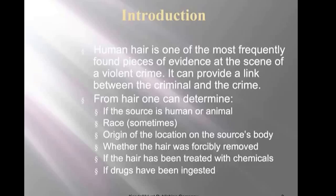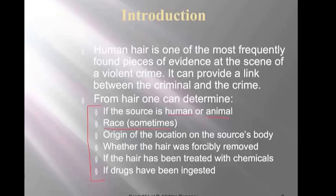Here we have a list of some things that you can determine by looking at a single hair. You can tell if it's animal or human. Sometimes we're able to determine race — this isn't always 100% certain, as most people are not purely of one racial profile anymore — but a lot of times we are able to determine a general racial profile. We can often figure out where the body hair was located on the individual's body, since an eyelash is going to look very different than a head hair versus a leg hair.